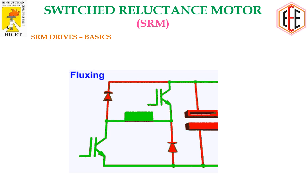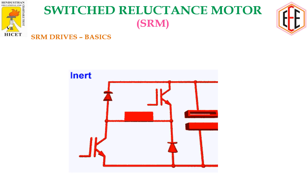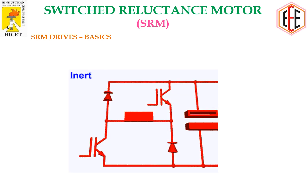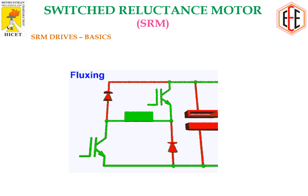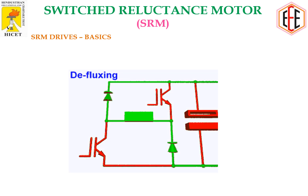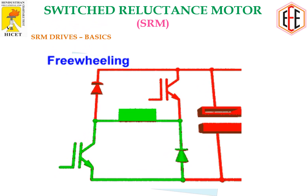In the SRM drives, there are four modes: inert, fluxing, freewheeling, and defluxing. Inert means the circuit is connected across the supply. Fluxing means the flux is developed in the respective coils using two switches. In freewheeling, the stored energy is dissipated back to the supply through those same switches. Defluxing means de-energizing the respective coils. These four modes are very important in SRM drives.